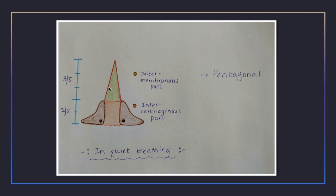The vocal folds are formed by the vocal ligament, which is the upper free margin of the cricovocal membrane, and laterally it is accompanied by the vocalis muscle. Together they are covered by non-keratinous stratified squamous epithelium. This constitutes the intermembranous part of the rima glottidis.